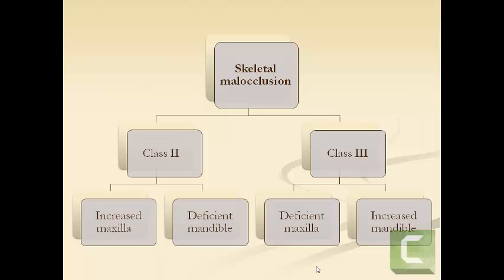A skeletal class 2 or class 3 malocclusion can result from various combinations. A class 2 malocclusion may result from an increased or forwardly positioned maxilla, a deficient or backwardly positioned mandible, or a combination. A class 3 may be due to a smaller or deficient maxilla, an increased mandible, or a forwardly placed mandible. It is important to find the underlying cause, because treatment for class 2 with an increased maxilla is totally different from that due to a deficient mandible.